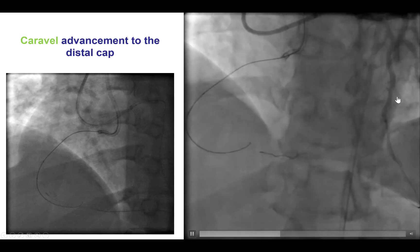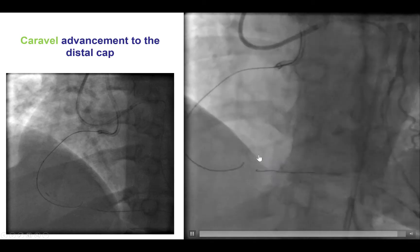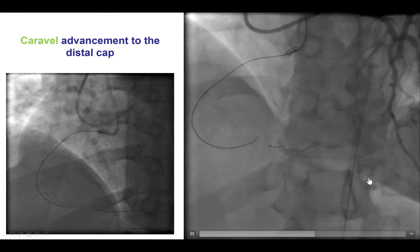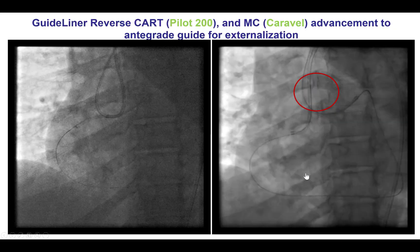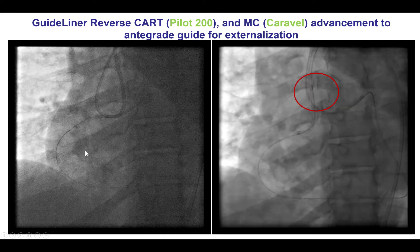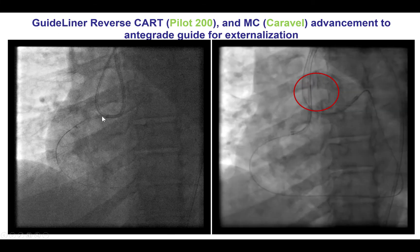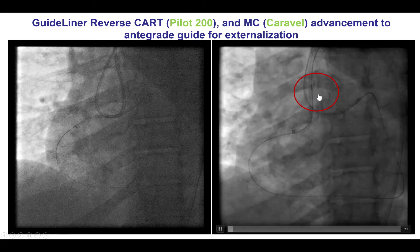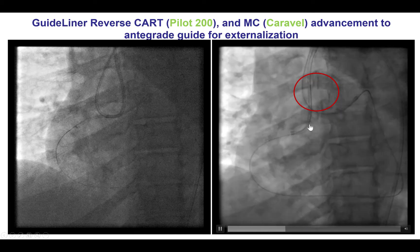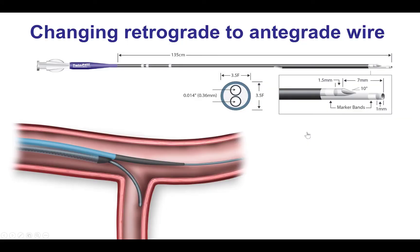This was confirmed by injection through the retrograde guide catheter — a key step before advancing the microcatheter through the collateral. We were then able to advance the Caravelle through the collateral all the way to the distal and mid-right coronary artery, and then performed guidewire reverse CART by advancing the retrograde guide wire and microcatheter all the way into the antegrade guide catheter, which had been changed to a JR from an Amplatz, as the JR is easier to use for externalization.